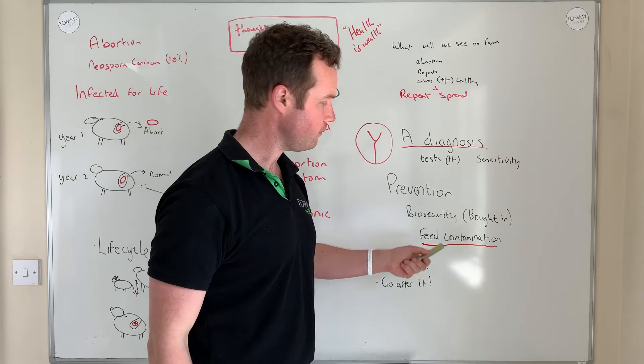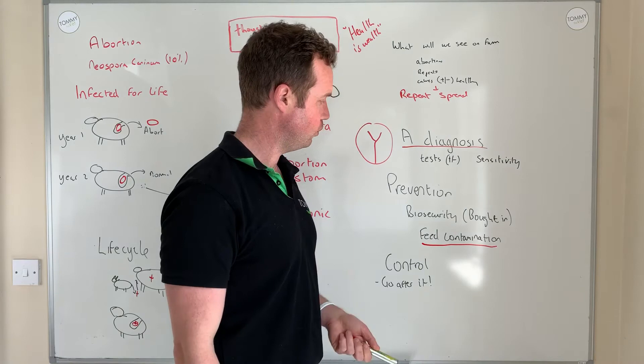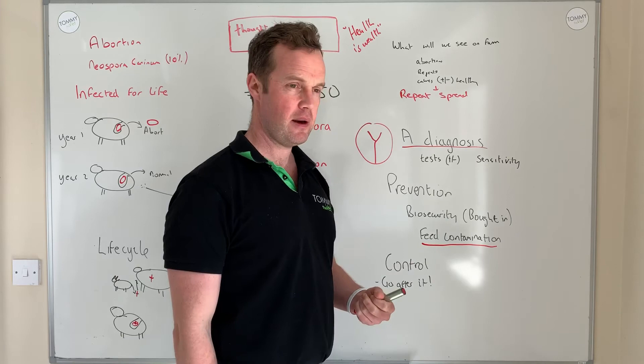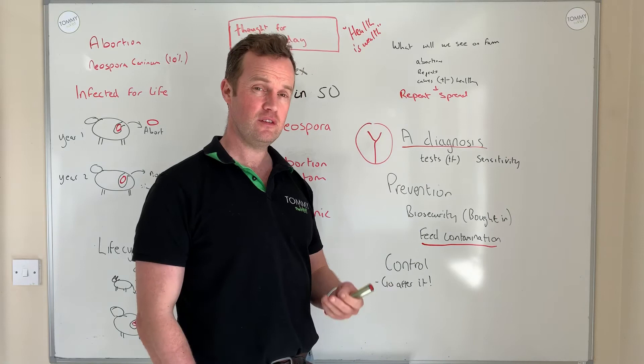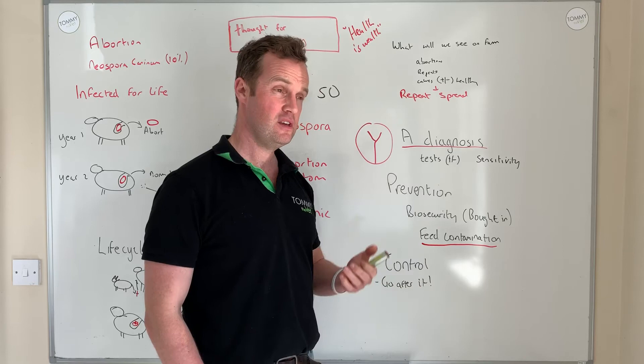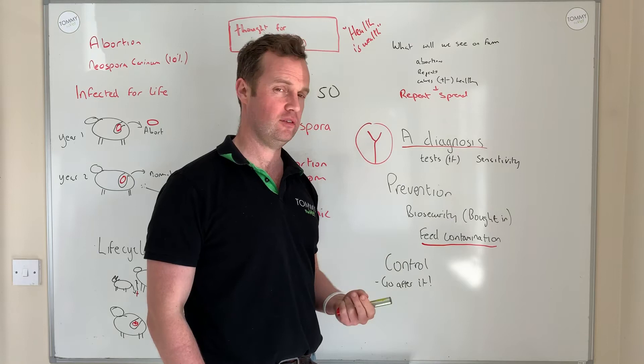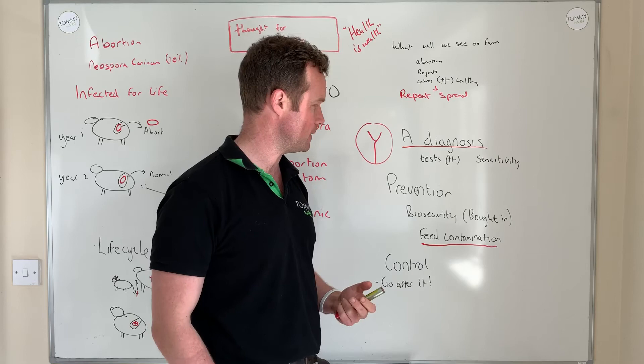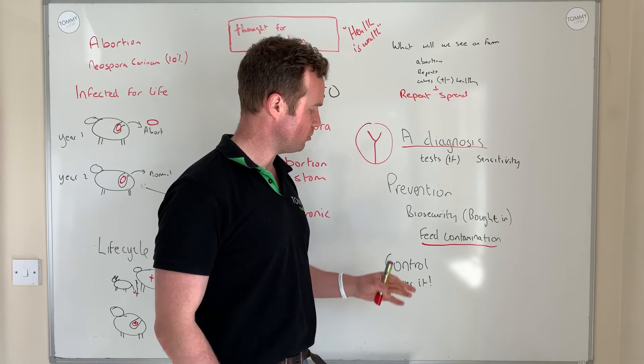A big thing is that since the canine plays a key role as a host for the parasite, we must ensure dog feces doesn't contaminate feed — feed stores should be secure. The farm dog must not be part of that cycle. If you do get abortion storms, don't cull the farm dog, because by that stage the farm dog would be negative. It's also a challenge with people walking their dogs on farm land — consider putting up signs, practice good principles like dogs on leads, and ensure bought-in feed hasn't been contaminated.